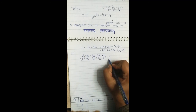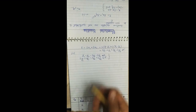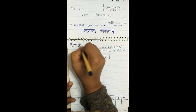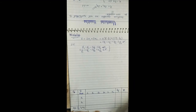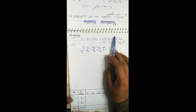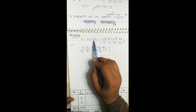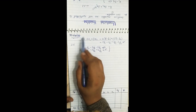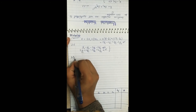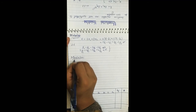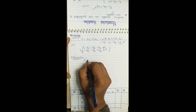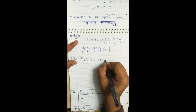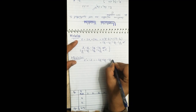This is our final objective function with the two constraints, and we have to minimize it. As learned in the previous lecture, to minimize an LP model we first convert it to maximization by multiplying the objective function by negative one. The new maximization function becomes minus 2y1 plus 2y2 minus 3y3 plus 3y4.